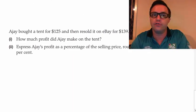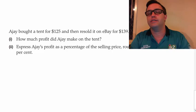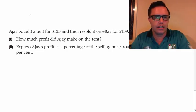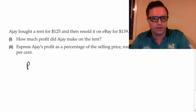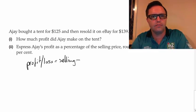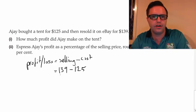Next one, AJ buying himself a tent for $125, resells it for $139. How much profit did AJ make on the tent? Secondly, express his profit as a percentage of the selling price, round it to the nearest percent. So a similar type of thing. Again, I'm going to write our formulas. So the profit or loss is equal to selling minus cost. He sold it for $139 minus the cost of $125, which is equal to $14.